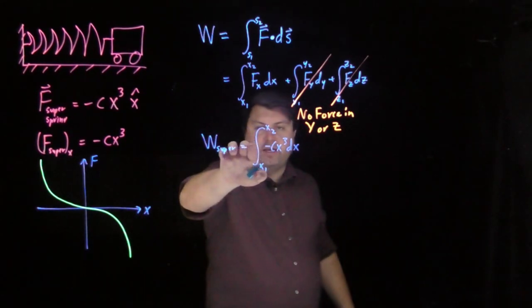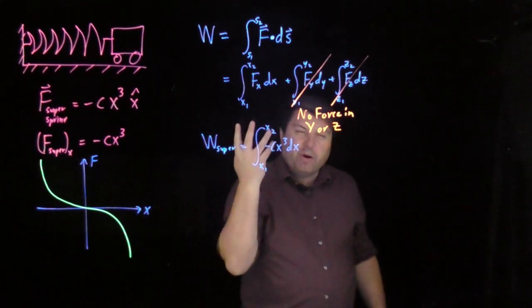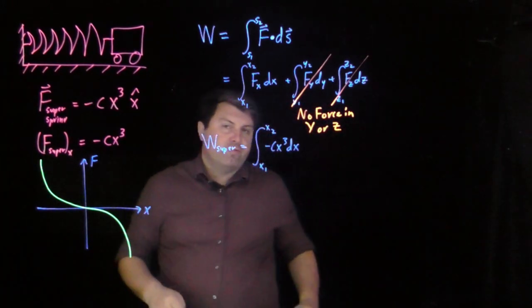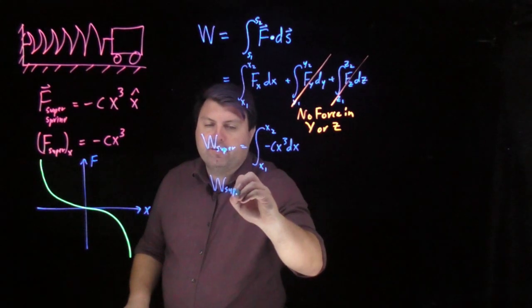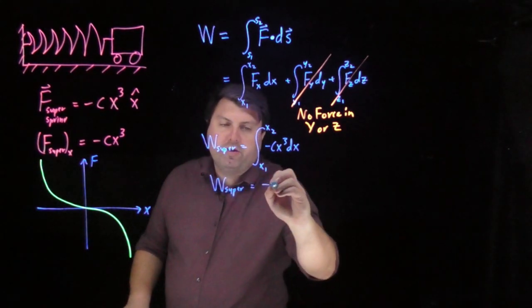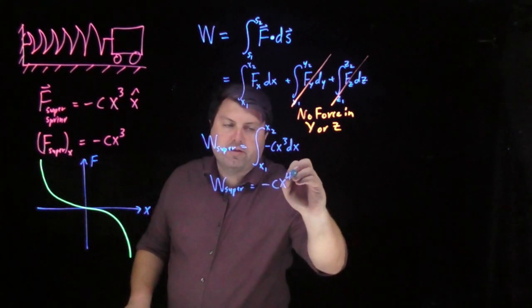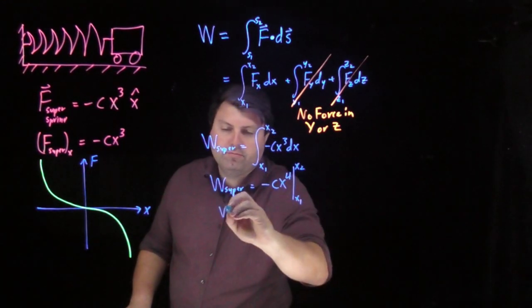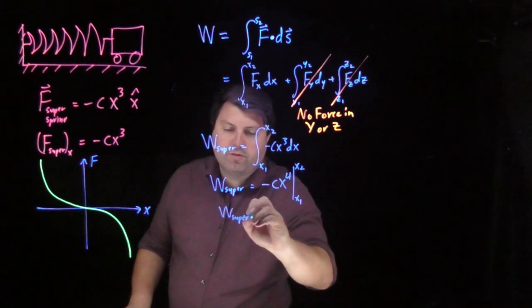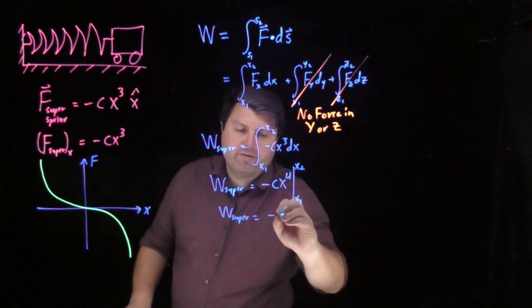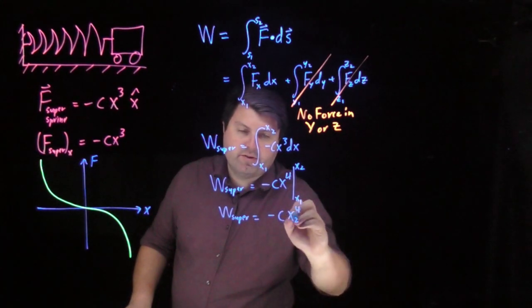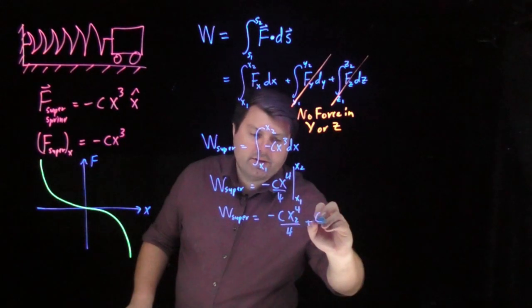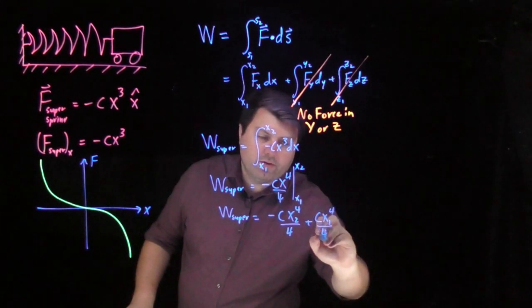So if we want, we can bring negative c out because it's constant, but we hopefully feel pretty good. Integral of x³ dx would give us x⁴ over four. So the work from our super spring is going to be negative c times x⁴ over four, evaluated from x₁ to x₂. So the work from our super spring is going to be negative c x₂⁴ over four plus c x₁⁴ over four.